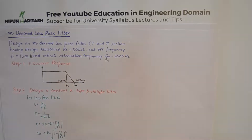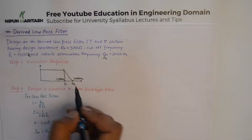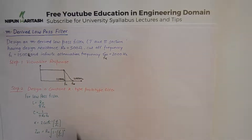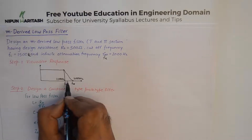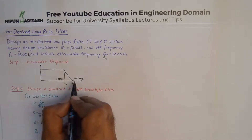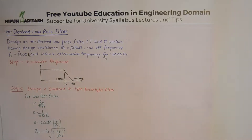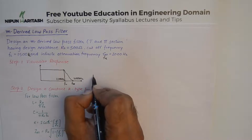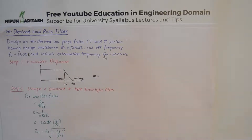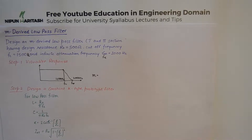This sluggish response of the filter is what we want to remove. Because of this difference in frequencies being allowed by the filter — which shouldn't have been allowed in the first place — we calculate a constant by the name of M, which is used to change the component values. Step two involves finding the component values for the constant K type prototype filter.